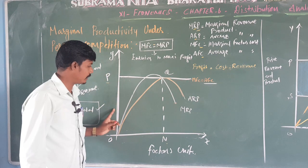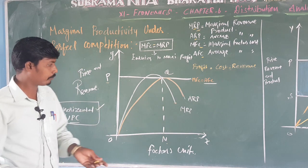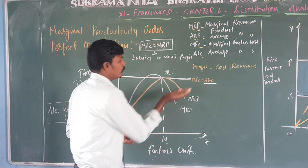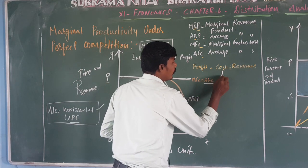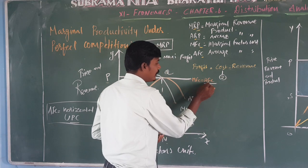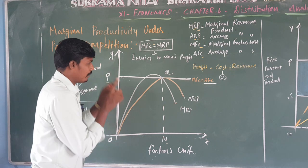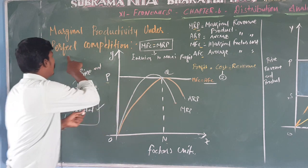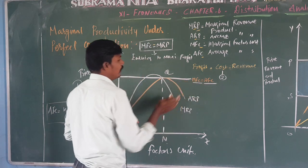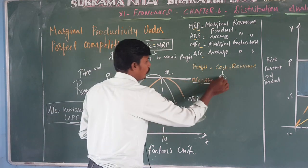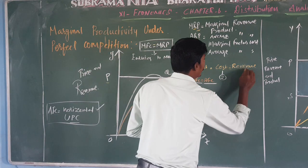Now we have the X-axis and Y-axis drawn. If you look at MFC — it is a cost. Under perfect competition, MFC and AFC are both horizontal. So here are two horizontal lines representing the two costs: MFC and AFC.